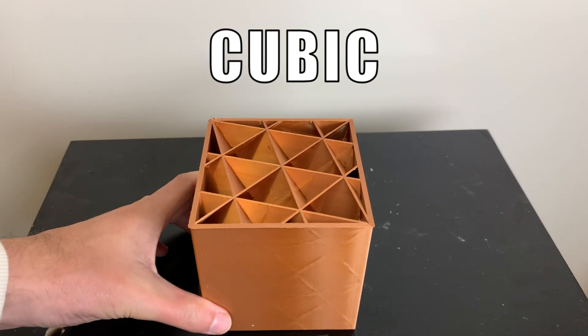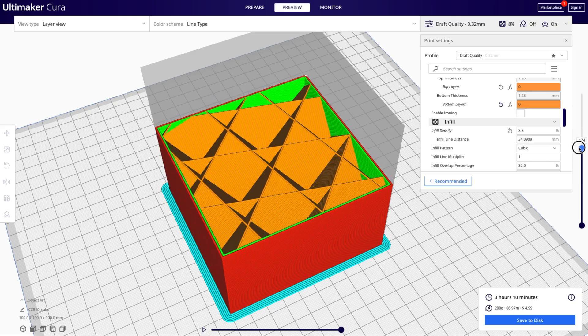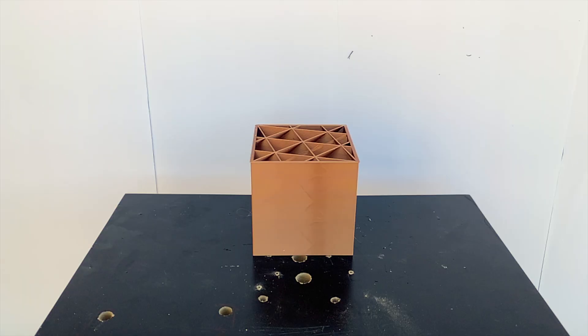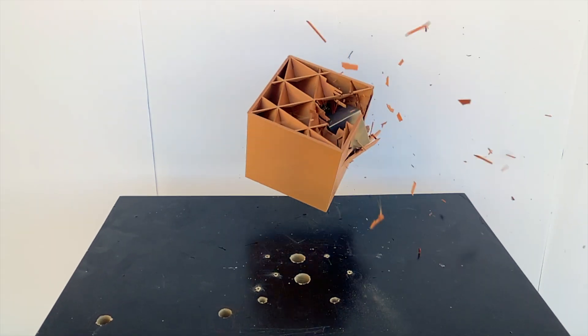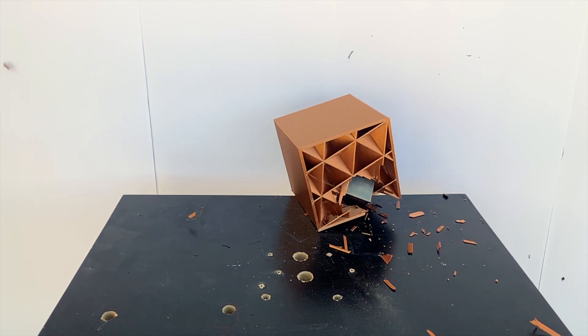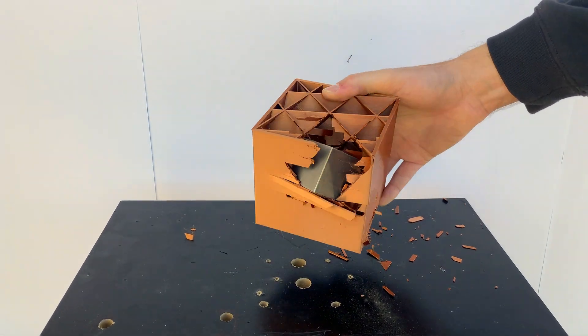Up first we have the cubic infill. This infill takes a cross section of diagonal cubes and essentially makes a bunch of triangles. This internal structure did a pretty good job of stopping the falling tungsten cube.